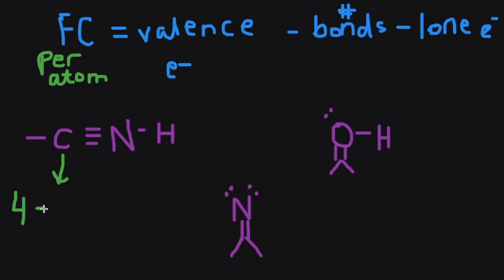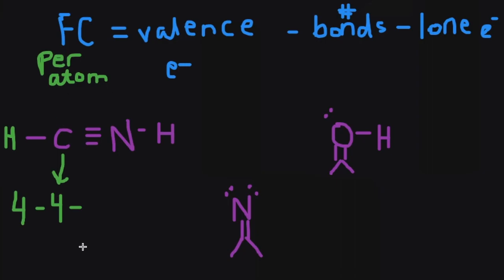Then we subtract the number of bonds that it's making. Carbon has one bond to hydrogen and three bonds to nitrogen, so we subtract four, minus the number of lone electrons around carbon. A lone electron would look something like this — just two electrons sitting on the atom. We don't have any lone electrons on carbon, so we subtract zero. That means the overall formal charge on carbon is zero.